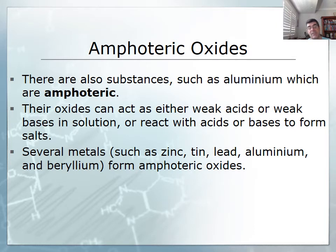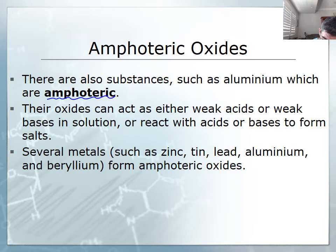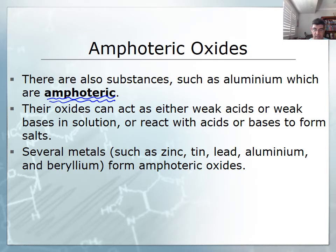Now some substances do both. Some substances are capable of neutralizing both acids and bases, and so we don't call them metallic or non-metallic oxides — we call them amphoteric. This term describes oxides which can act as either acids or bases in solution, or react with acids or bases to form salts and water.